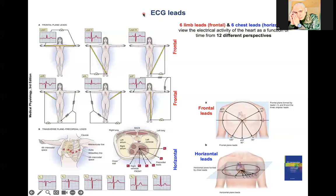In previous parts, we discussed in-depth ECG leads. We have 12 leads: 6 limb leads or frontal leads, and 6 chest leads or horizontal leads. These create a circle of 360 degrees.